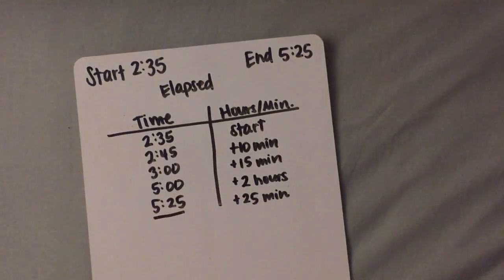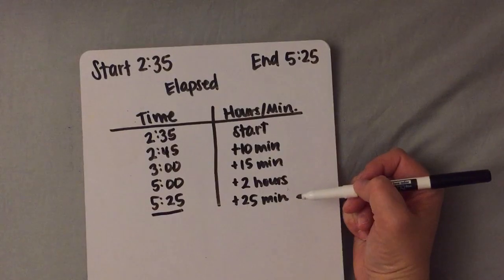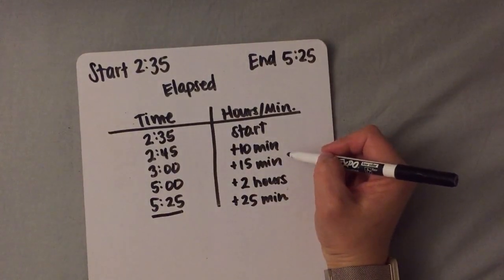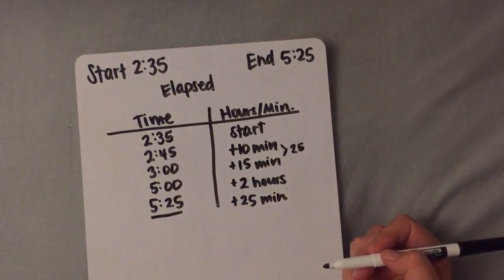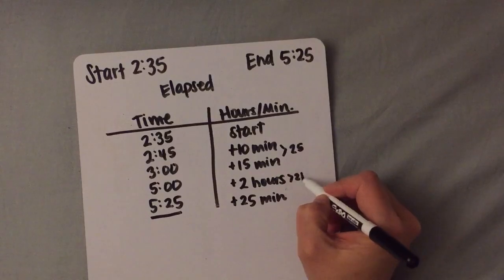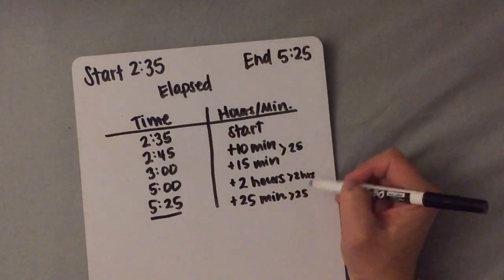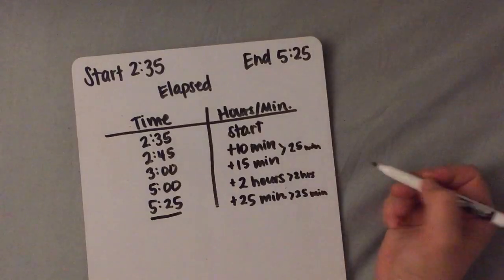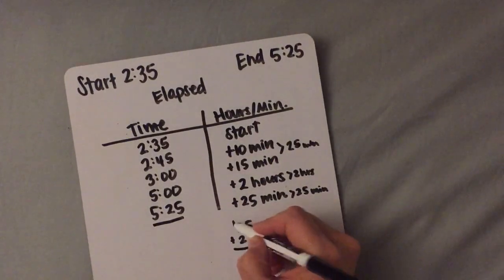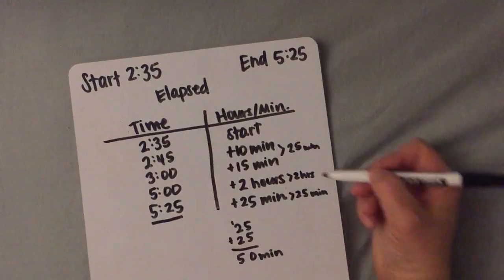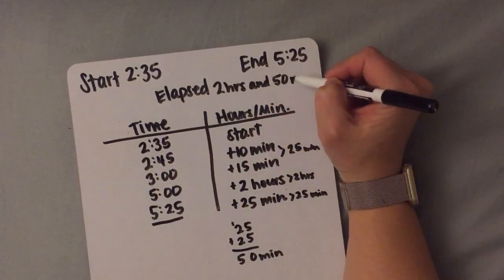Now that I have my end time, I'm done finding the elapsed time. However, I need to group up the units and add them together to find the totals for each of the units. Right here I have minutes together, which equal 25. And then I have 2 hours. And then I have minutes again, so I need to add these minutes up. Never forget your units. I have 25 minutes up here and I also have 25 minutes down at the bottom — 50 minutes total. So my elapsed time was 2 hours and 50 minutes.